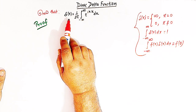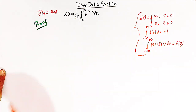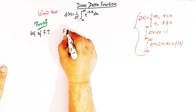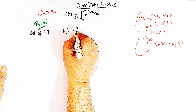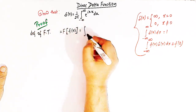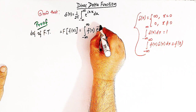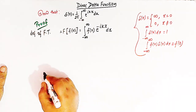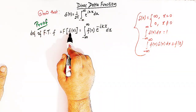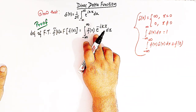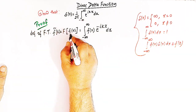Let us come to this problem. But before proving this, let us quickly define the Fourier transform and the inverse Fourier transform of a function. Suppose we have a function f of x. The Fourier transform of f of x is defined by the integral from minus infinity to infinity of f of x, e raised to minus ikx, dx. The notation for the Fourier transform of f of x is given by f of k.